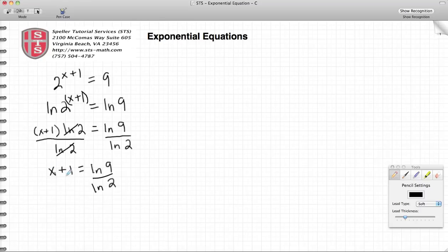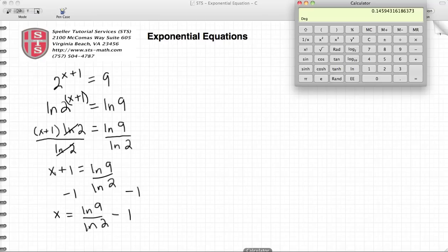At this point, we're going to go ahead and subtract 1 from both sides. That's going to leave us with x is equal to the natural log of 9 divided by the natural log of 2, minus 1.